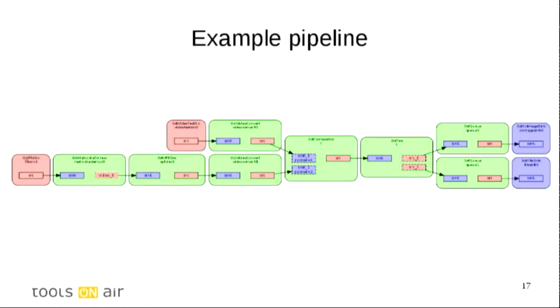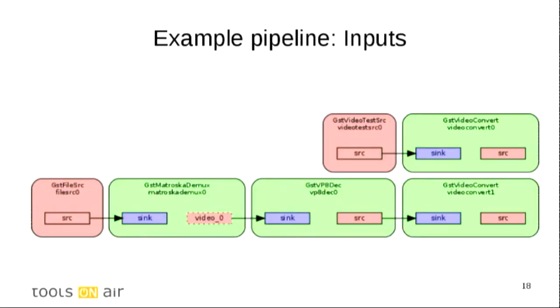Let's take a look again at this example pipeline. Just to repeat, the data is flowing from the left, from the sources into the sinks on the right. We zoom in a bit on the inputs. The top part is an input coming from a video test source, going into video convert, which basically converts, for example, the color space from one side to the other. The bottom part is reading from a file, demuxing, and from the demux streams, decoding the video and going to another video convert. These are two different inputs that we might use in our pipeline.